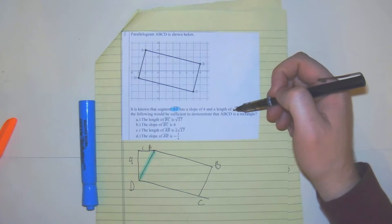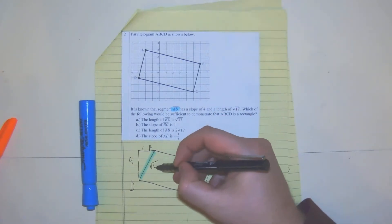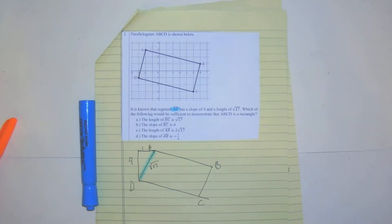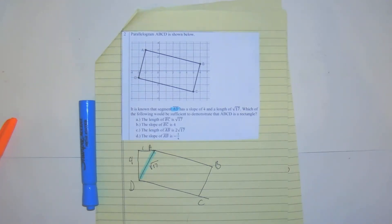And a length of square root 17. Which of the following would be sufficient to demonstrate that ABCD is a rectangle?